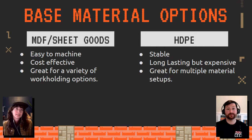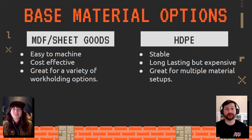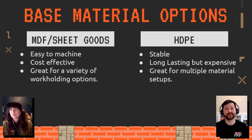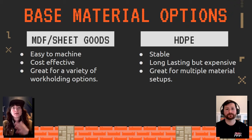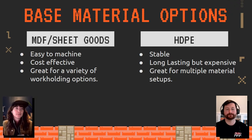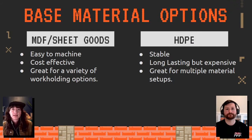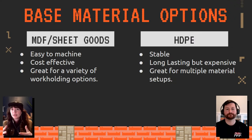If you're ever going to use any type of cutting fluid, MDF and moisture really don't get along. Part of Dark Arrow's decision was wanting the option of using a mist or cutting fluid, so HDPE was the best material for them. HDPE is also far more expensive than a sheet of MDF, and it is very heavy — though in this case that's a good thing, since it adds weight and structure to the frame. It's really great for multiple different kinds of material setups, including using mist or cutting fluids.